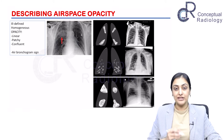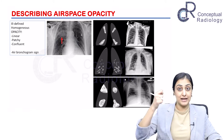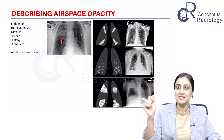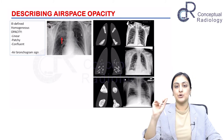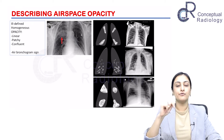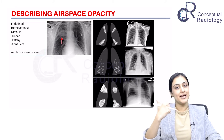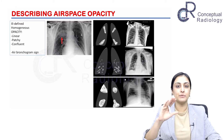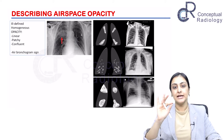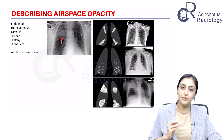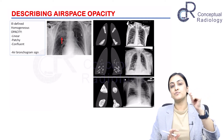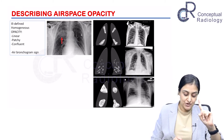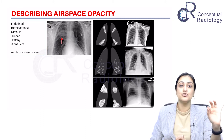Let us begin with the airspace opacity. Whenever we have an airspace opacity, we have already talked about the preliminary aspects: patient demographics, clinical history, any prior imaging, and then the technical parameters — we remember RIP: Rotation, Inspiratory effort, and Penetration. These are the first things you describe. Then we come to the abnormality. When you begin your description, you say it is an ill-defined homogeneous opacity.